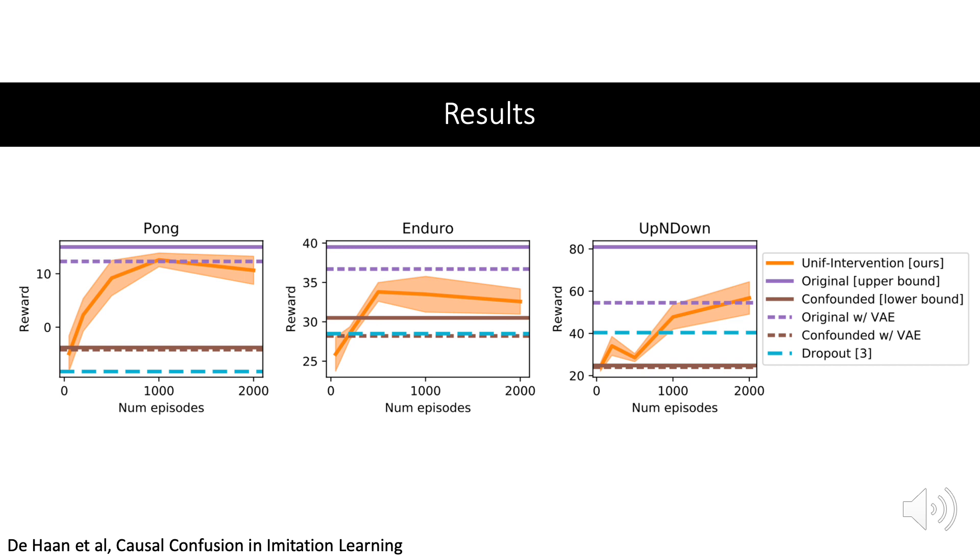So how well does our procedure perform for varying number of interventions? The upper bound is the solid purple line, which is the result of behavioral cloning on the original state. The lower bound, in solid brown, is the performance of behavioral cloning on the confounded state.